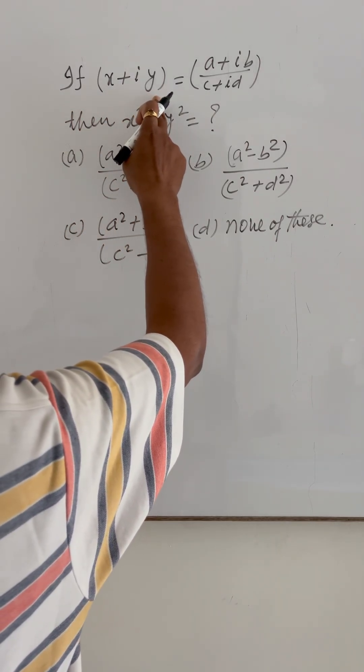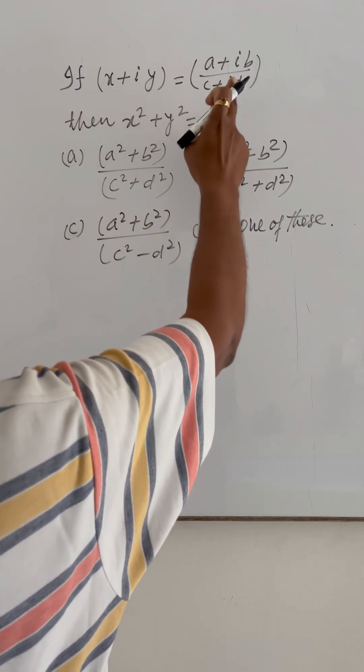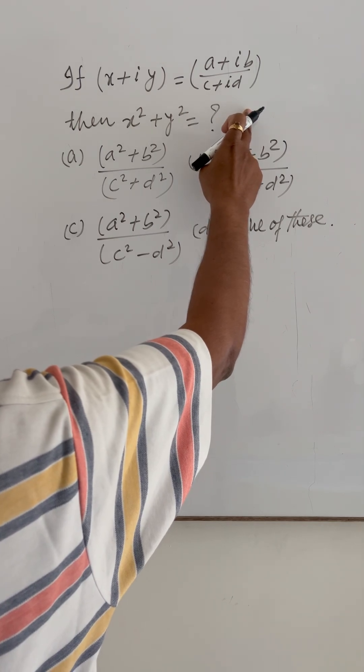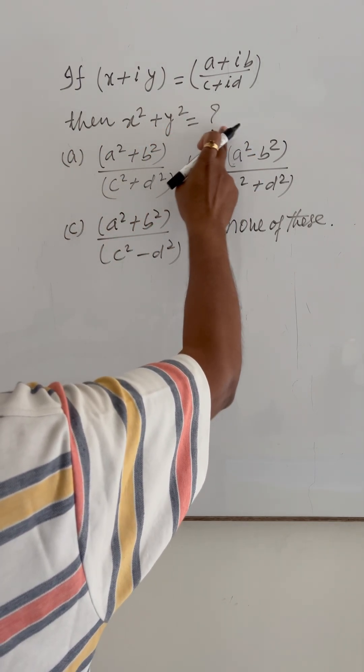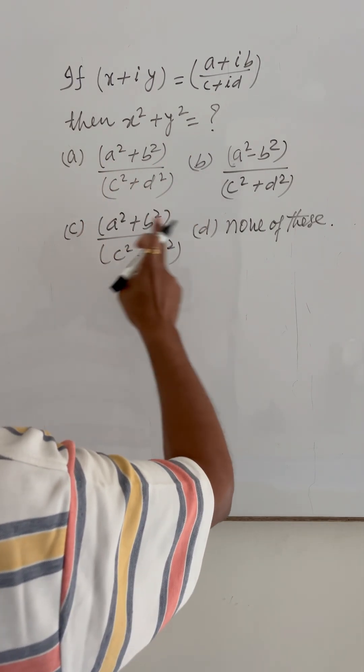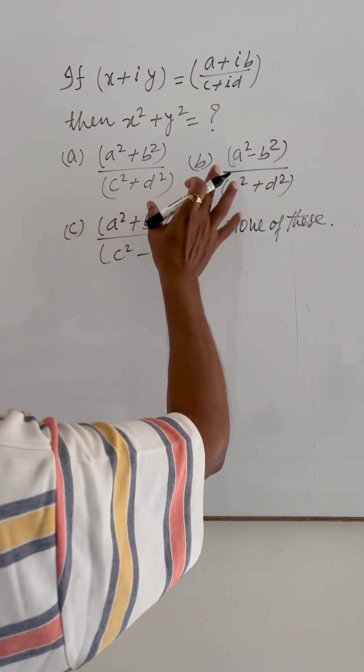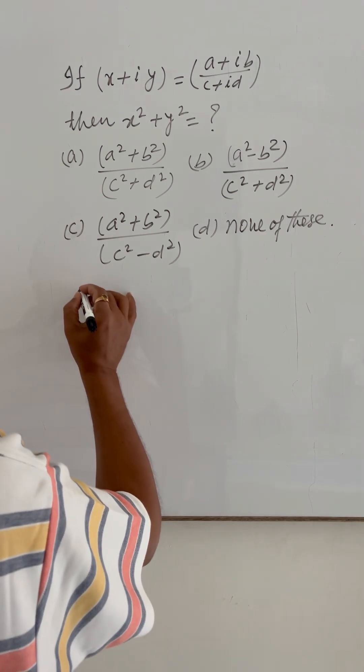Here the question is: if x plus iy equals (a plus ib) upon (c plus id), then x square plus y square equals how much? Four options A, B, C, D are given. We have to choose the correct answer.